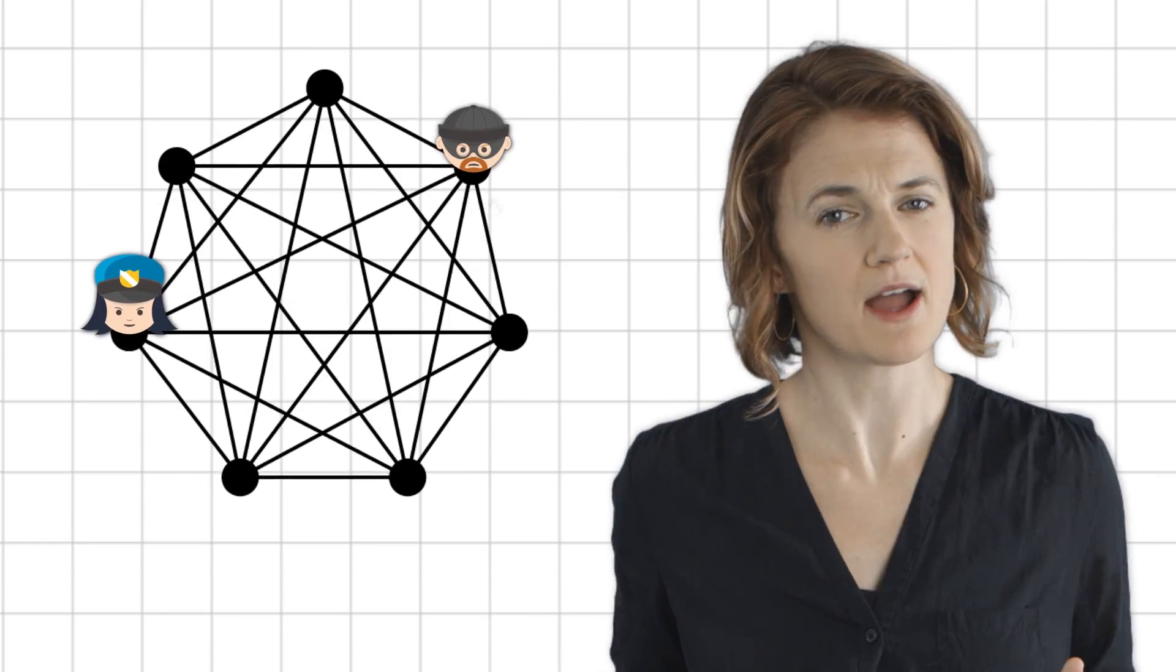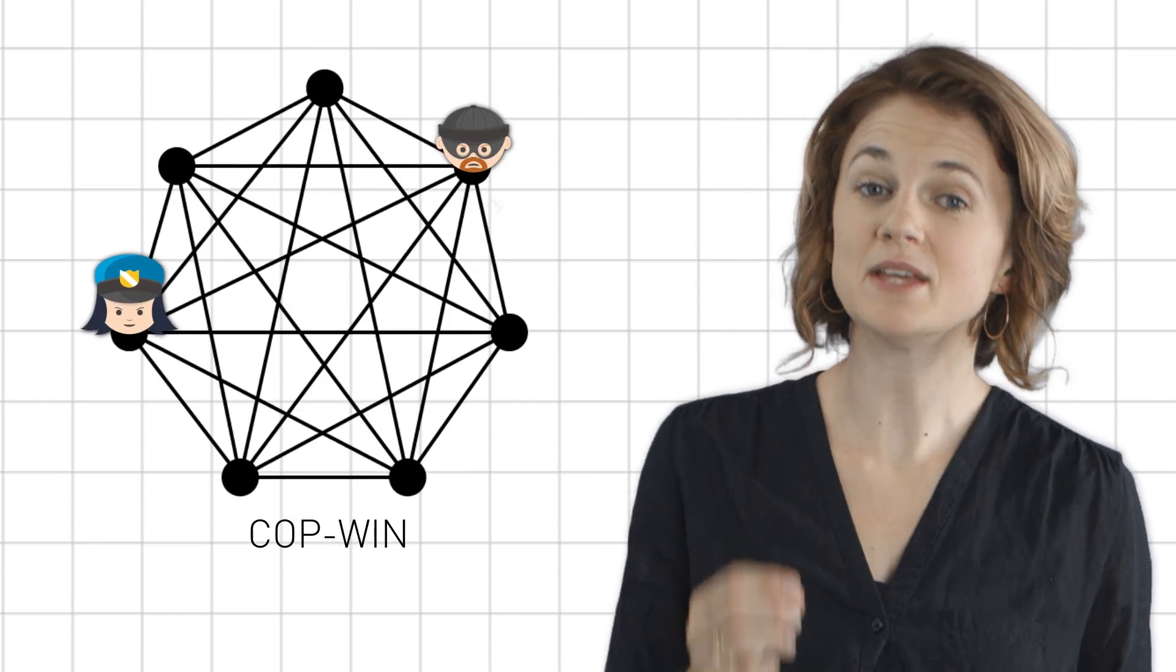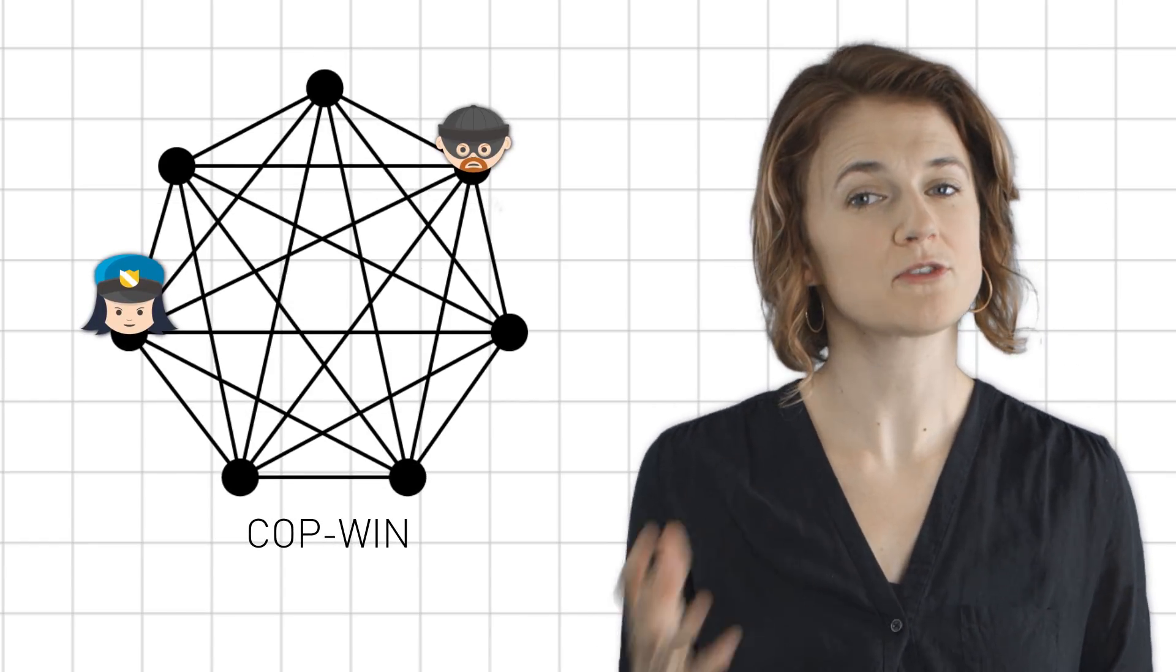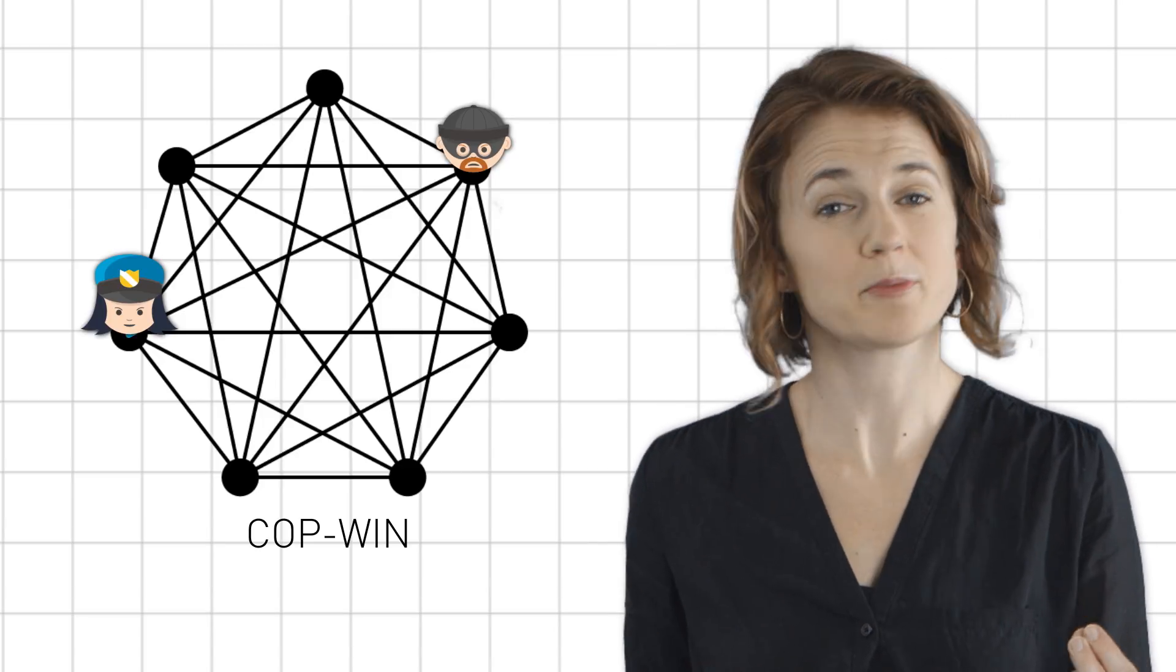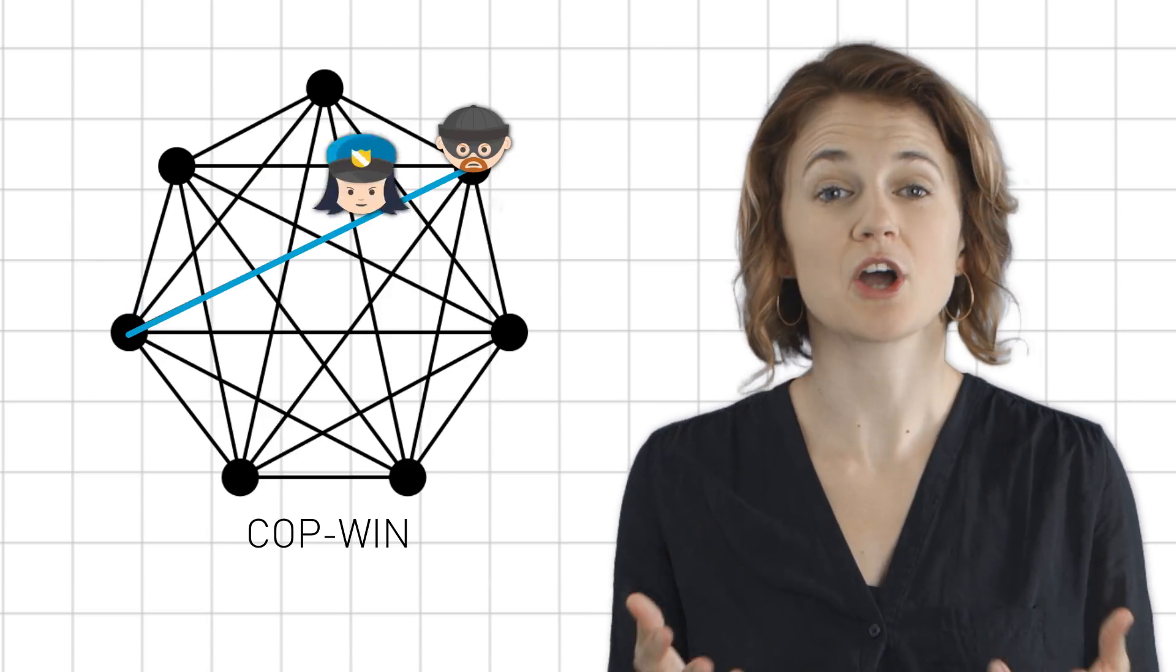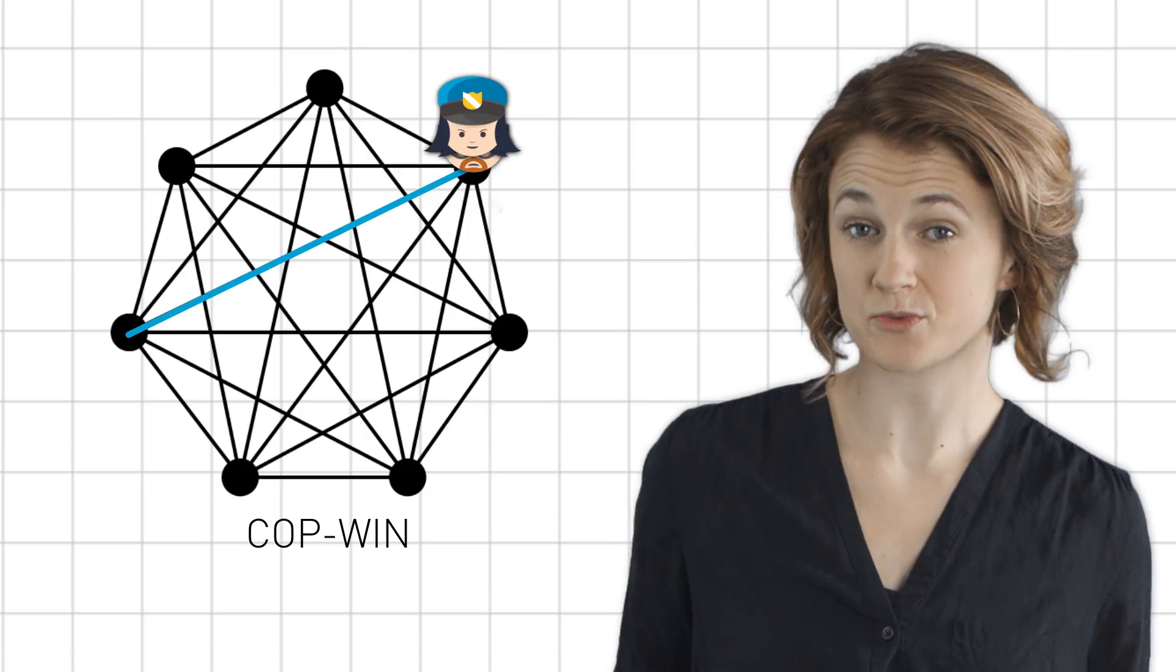What about the complete graph? Well, that's an immediate win for the cop. No matter where the robber and the cop start, their two vertices will be connected by an edge, which the cop will move along in the first turn to win.